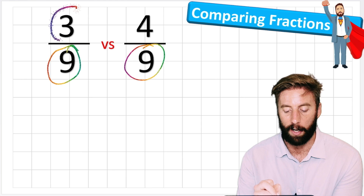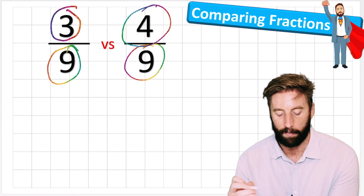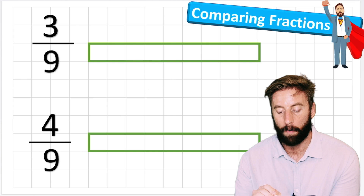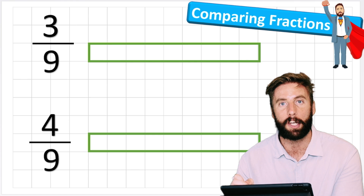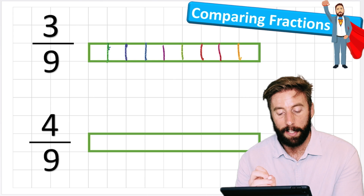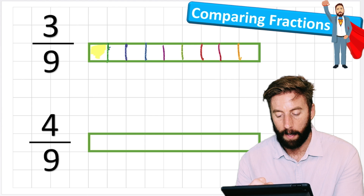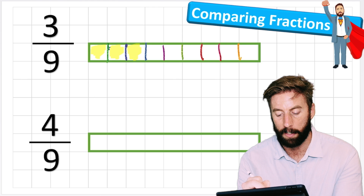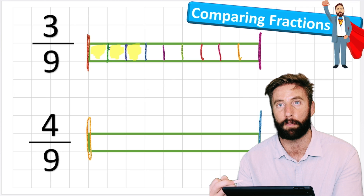What helps is turning this into a bar model. The first one says three ninths - imagine this green line is my chocolate bar. I've chopped it into nine even sections: one, two, three, four, five, six, seven, eight, nine. This first fraction gives me three of them. My second one - again the same value chocolate, same amount - but this time I'm getting four: one, two, three, four, five, six, seven, eight, nine sections, and I'm getting four of them.